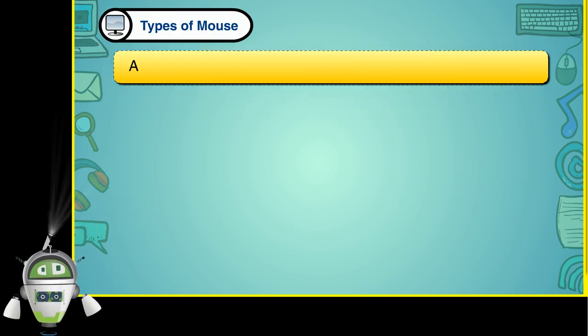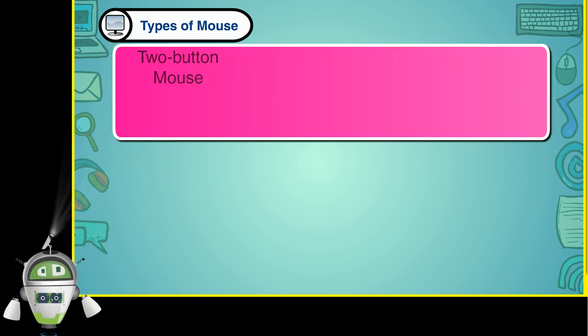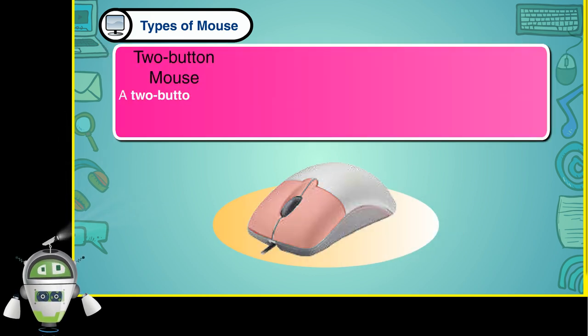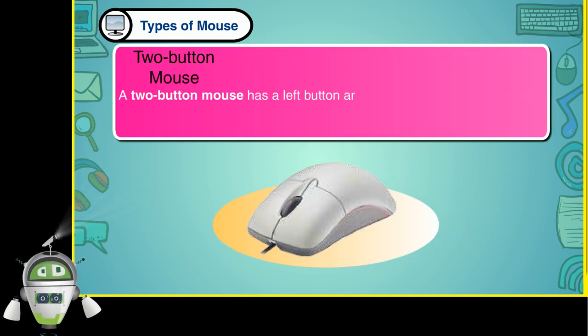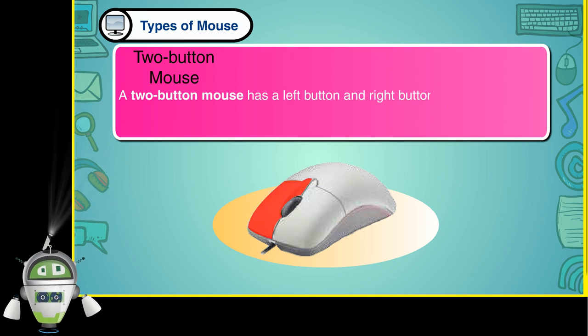Types of Mouse. A computer mouse can be of different types. Two-button mouse: A two-button mouse has a left button and right button.